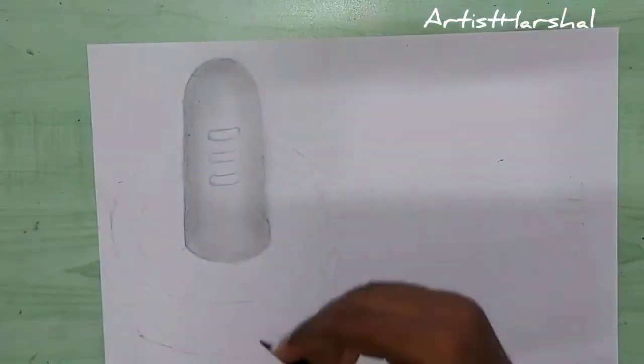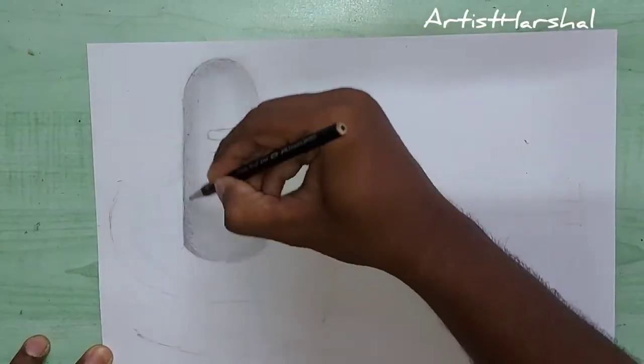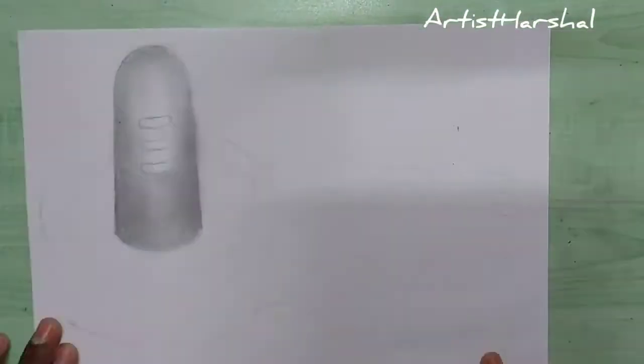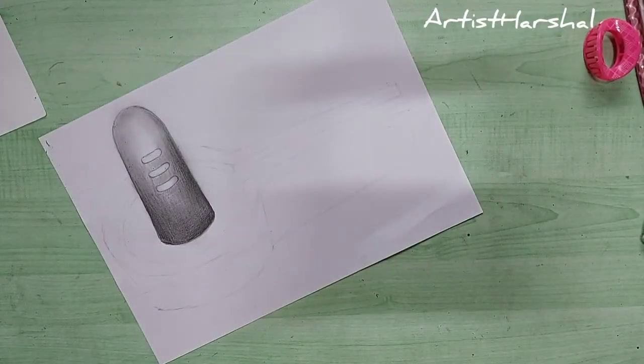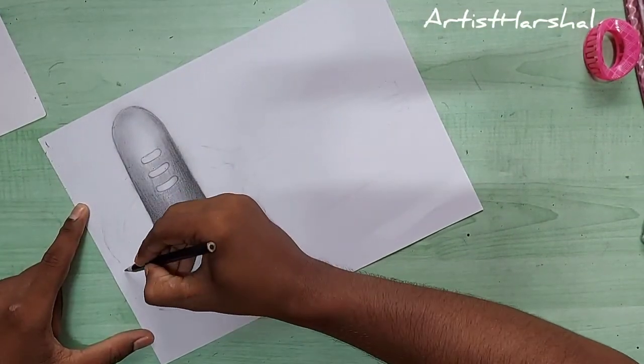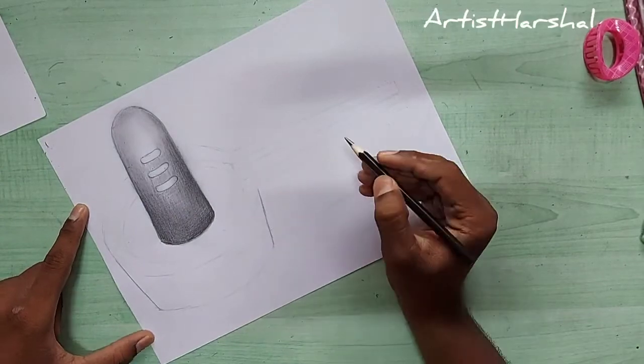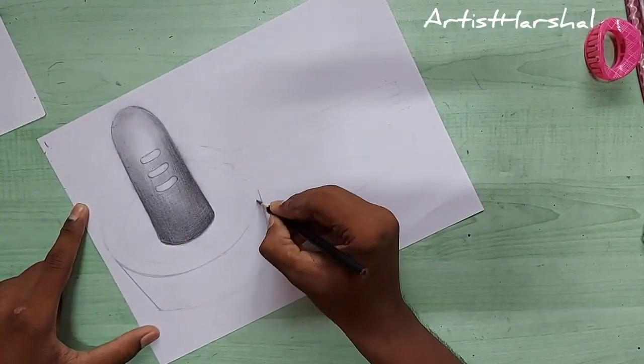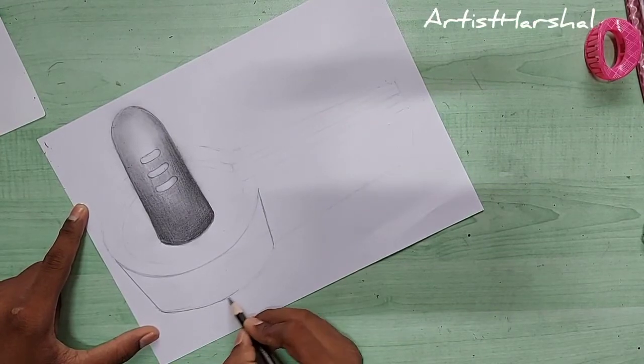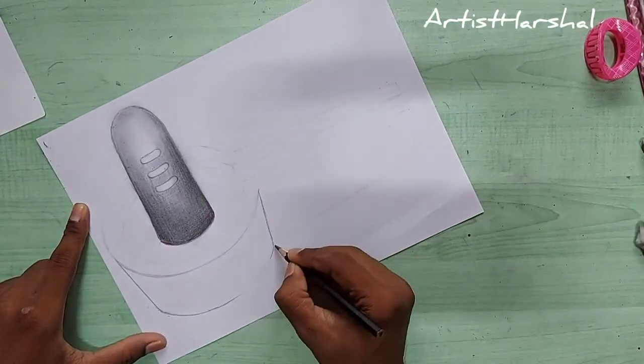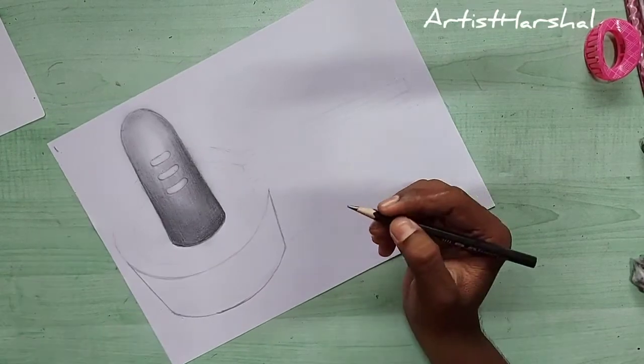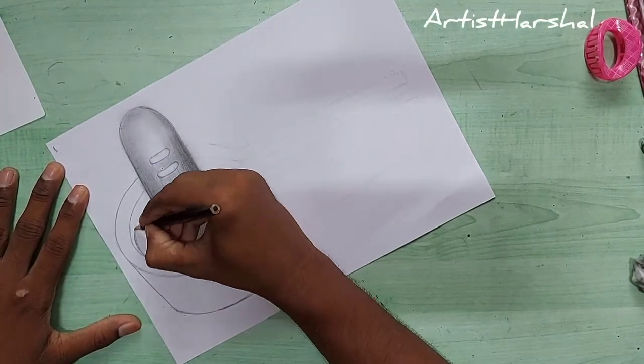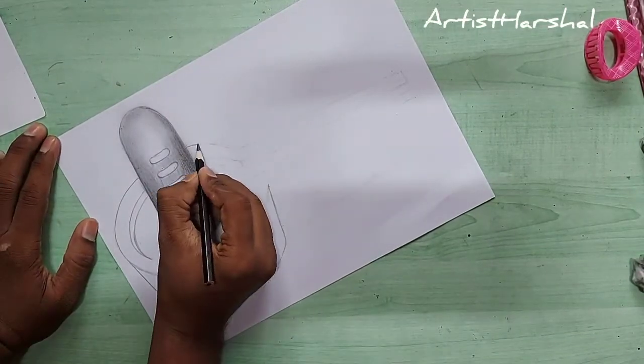And we'll do blending and smoothing like this. It's very easy. You can make a single line.